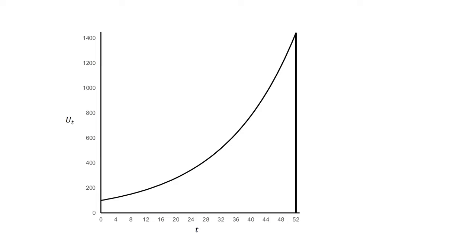This figure visualizes the problem. The bar at t equals 52 represents the $1,440.03 that the agent would need to be paid to prefer that payment to $100 today. The line extended back from that bar to t equals 0 indicates the discounted value of that payment at any time t. At t equals 0, the discounted value of the $1,440.03 is $100.